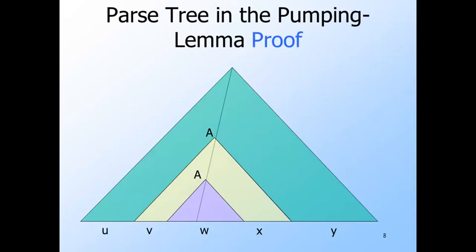Here's a picture of the parse tree for Z. We've shown the path we've focused on and the lowest repeating variables along that path. The purple tree is rooted at the lower A, and the yellow tree with the purple tree within it is rooted at the upper A.